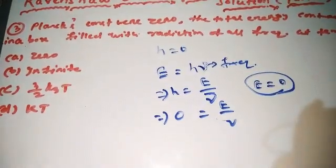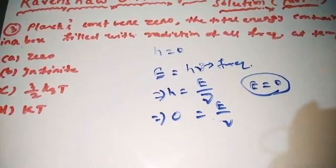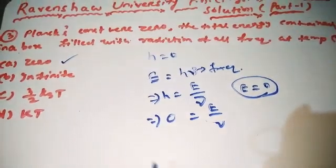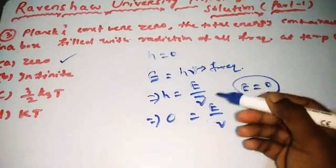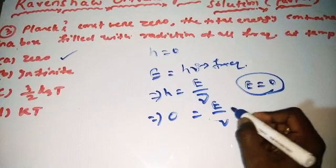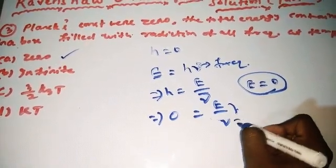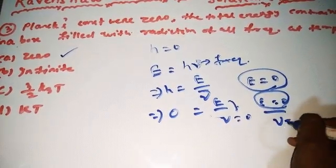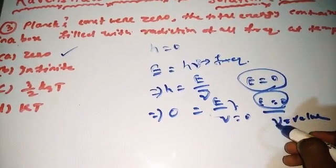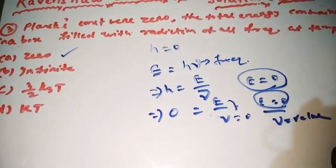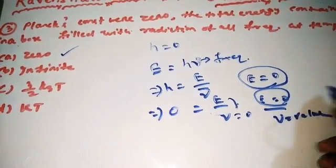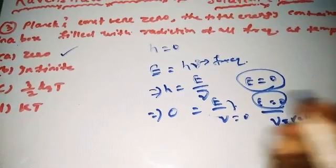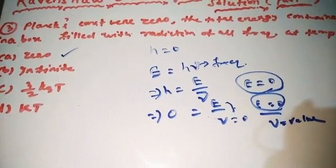If Planck's constant is 0, then radiation of all frequencies would have energy content equal to 0. Zero is the right answer.